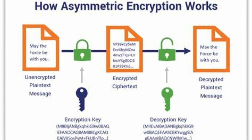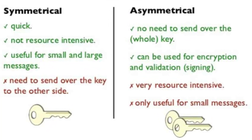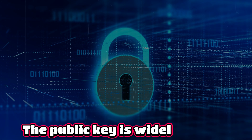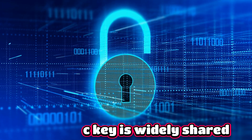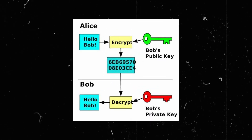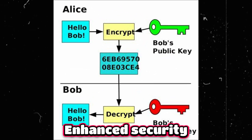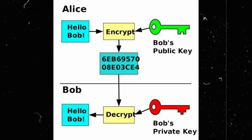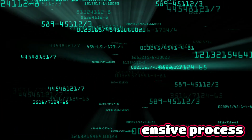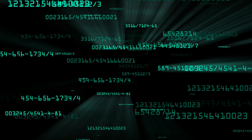Let's shift our focus to asymmetric encryption. Unlike symmetric encryption, asymmetric encryption uses two distinct but mathematically linked keys: the public key and the private key. The public key is widely shared, allowing anyone to encrypt data, while the private key is kept secret and used for decryption. Asymmetric encryption provides enhanced security and facilitates secure communication between parties who have never shared a key before. However, it is a computationally intensive process, which may slow down encryption and decryption operations.